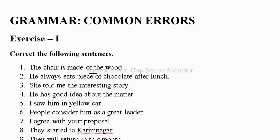The first sentence: 'The chair is made of the wood.' We say 'made up of' when something is made from more than one material. But here the chair is made with one material, so the correct form is 'made of.' Also remove the article 'the' before 'wood.' So: the chair is made of wood.